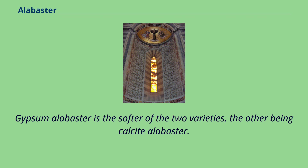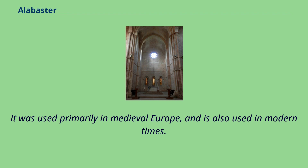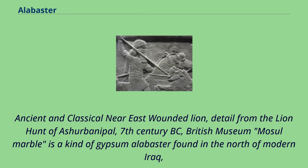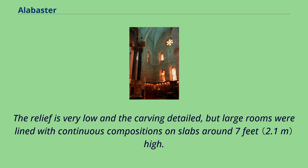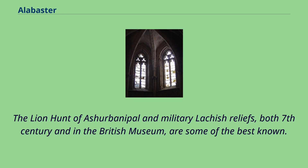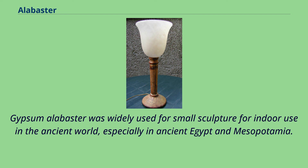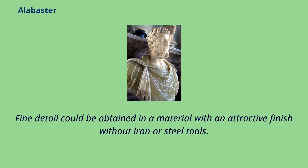Gypsum alabaster is the softer of the two varieties, the other being calcite alabaster. It was used primarily in medieval Europe and is also used in modern times. Mosul Marble is a kind of gypsum alabaster found in the north of modern Iraq, which was used for the Assyrian palace reliefs of the 9th to 7th centuries BC — the largest type of alabaster sculptures to have been regularly made. The relief is very low and the carving detailed, but large rooms were lined with continuous compositions on slabs around 7 feet high. The Lion Hunt of Ashurbanipal and military Lachish reliefs, both 7th century and in the British Museum, are some of the best known. Gypsum alabaster was widely used for small sculpture for indoor use in the ancient world, especially in ancient Egypt and Mesopotamia, where fine detail could be obtained in a material with an attractive finish without iron or steel tools.